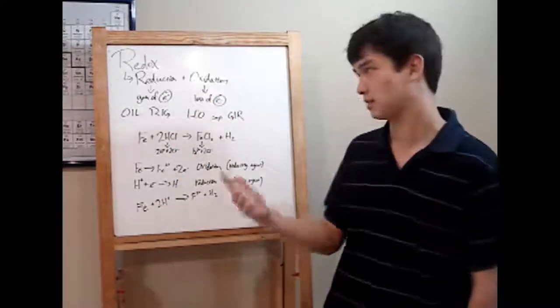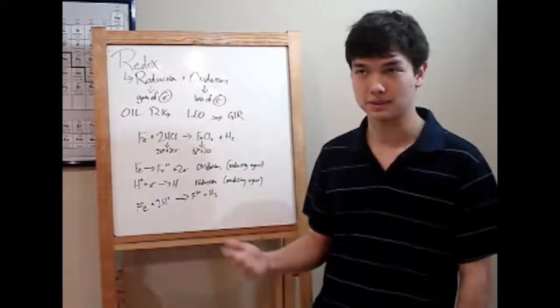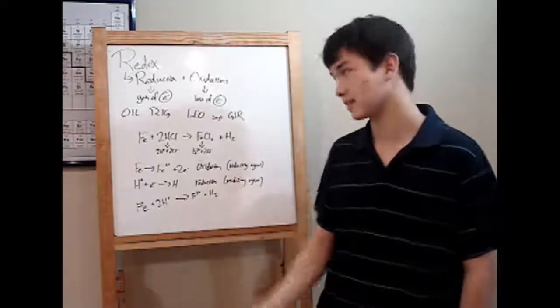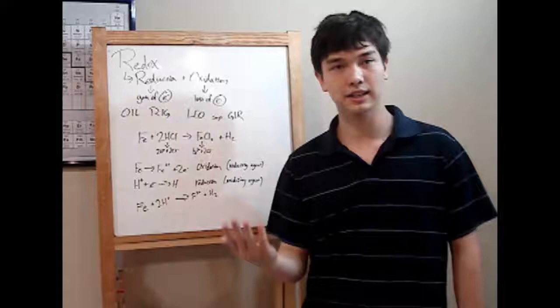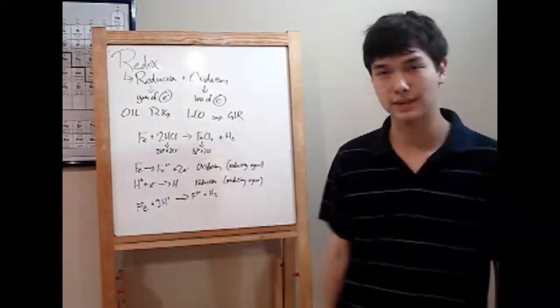The reason we stick them together is, one, it's a whole lot to say both of them at the same time, and also because they occur together. You can't have a gain of electrons without having a loss first, otherwise you just have electrons floating around in free space, and that doesn't happen.